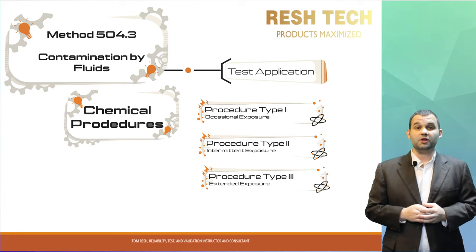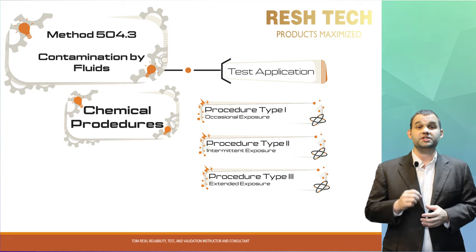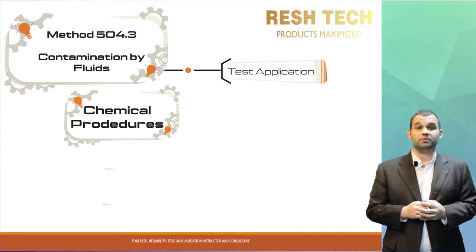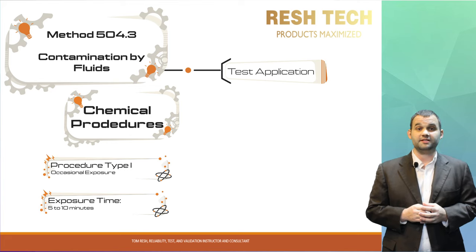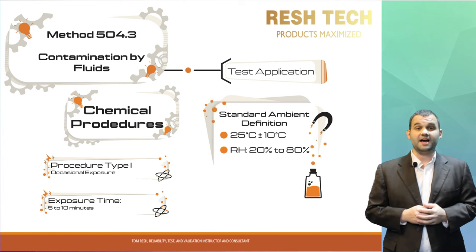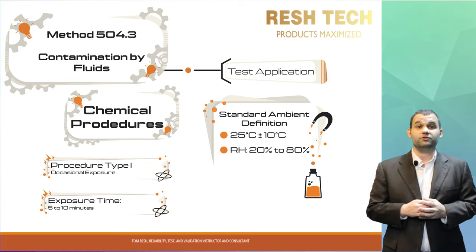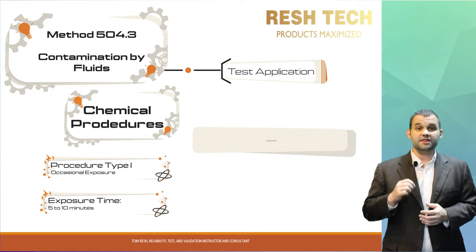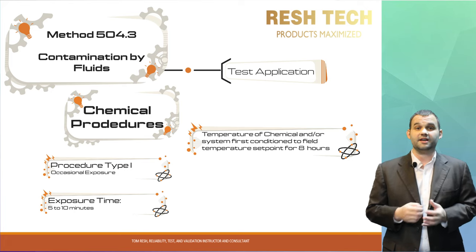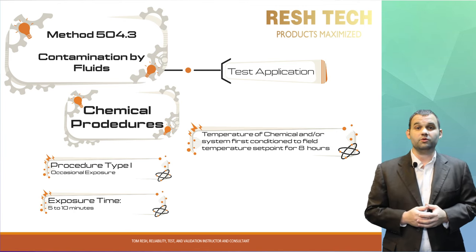MIL-STD-810H provides guidelines for selecting your test duration based on each exposure type. For occasional exposure, it is suggested that the item is exposed to a chemical for five to ten minutes. If the ambient temperature differs from the standard ambient temperature — which MIL-STD-810H defines as 25°C ±10°C with a relative humidity of 20 to 80% — then the temperature of the system or test coupon should be maintained and simulated to the field environment temperature for at least eight hours.